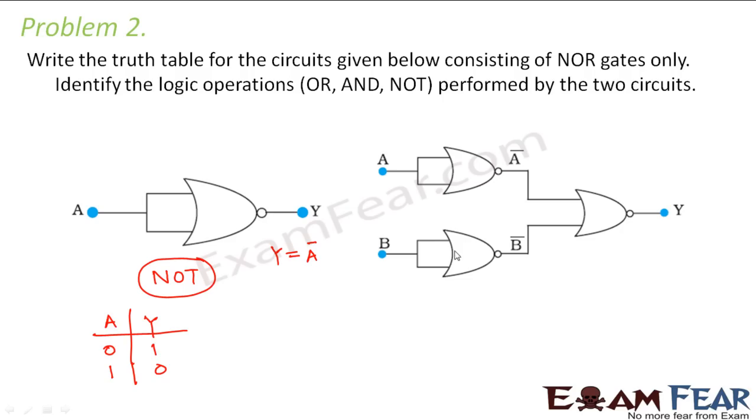For the second case you have A bar here, B bar here and here. What would be the output? It will be A bar plus B bar, bar. So let us try to draw the truth table. It is 0, 0, 0, 1, 1, 0, 1, 1.